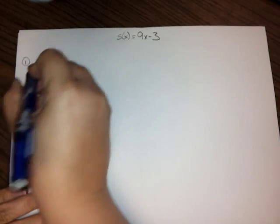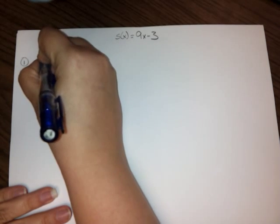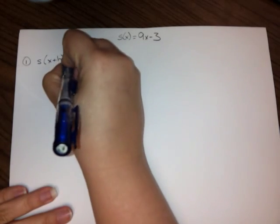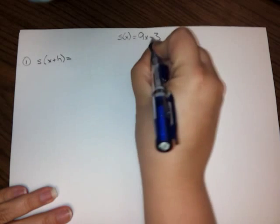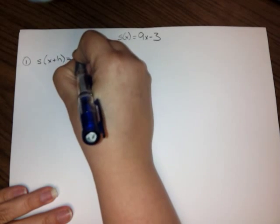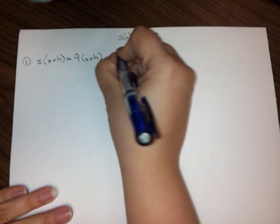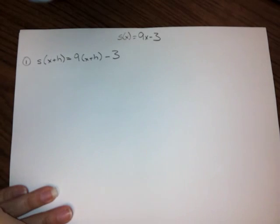And the first part of the four-step process is to find, in this case, because our function is s of x, we're going to be looking for s of stuff. So this is going to be s(x + h). That's the first thing we have to find. And that just means plugging this x + h into our original function. So that's going to be 9 times (x + h) - 3. I just plugged x + h in for the x that showed up in my function here.